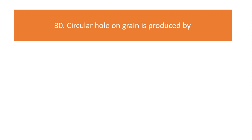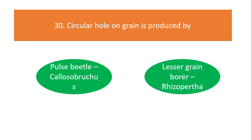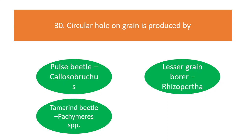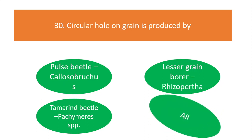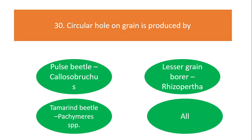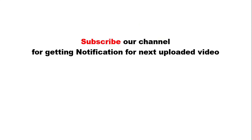Circular holes on grain are produced by: pulse beetle, lesser grain borer, tamarind beetle, or all of the above? The answer is all of the above. Thank you and all the best.